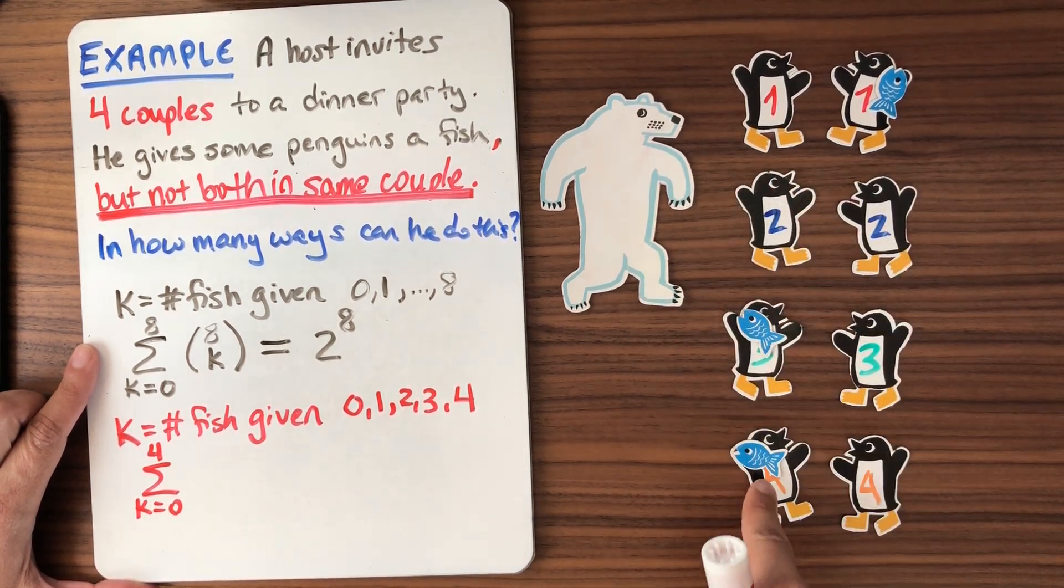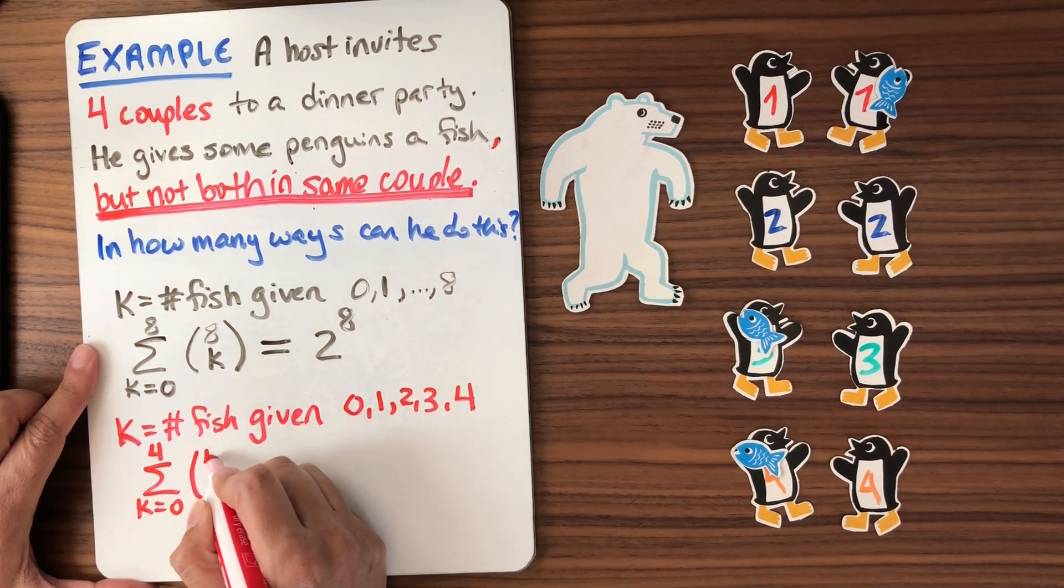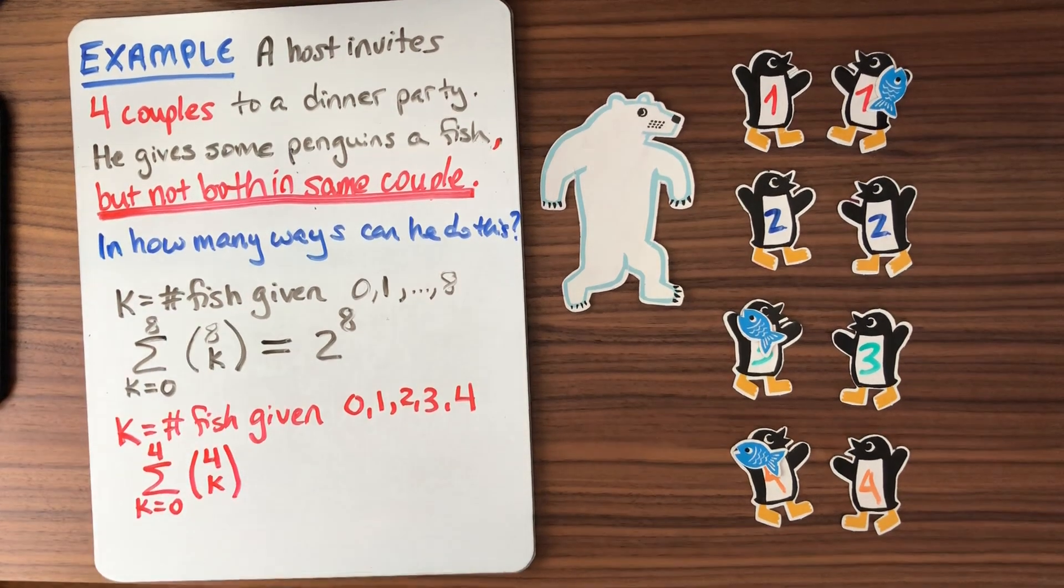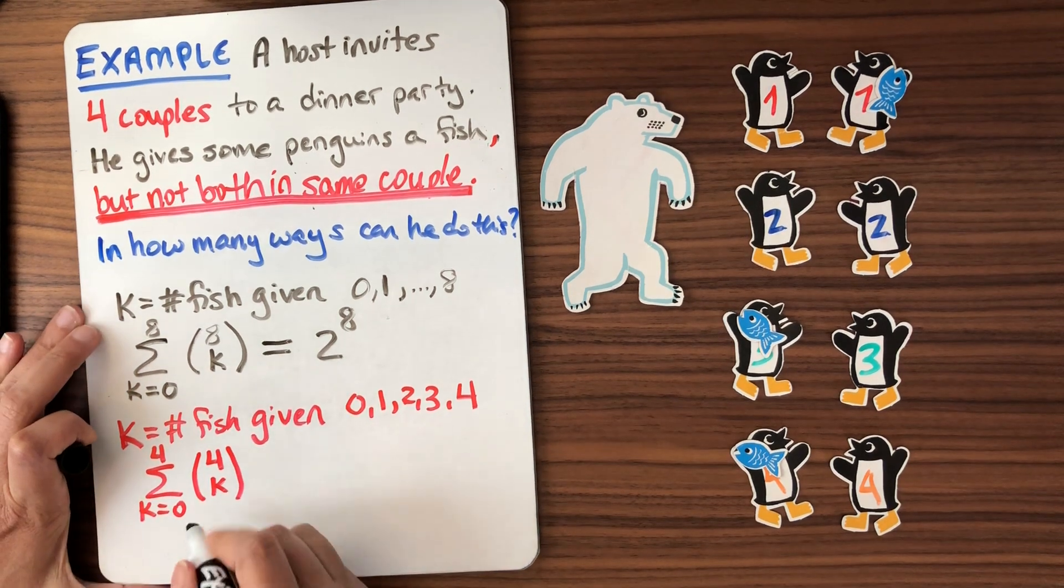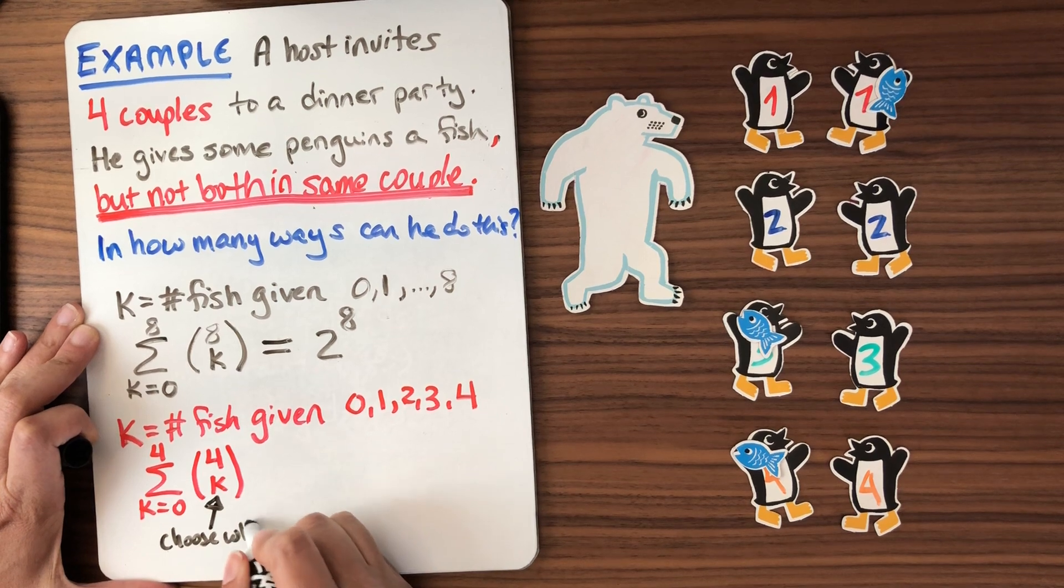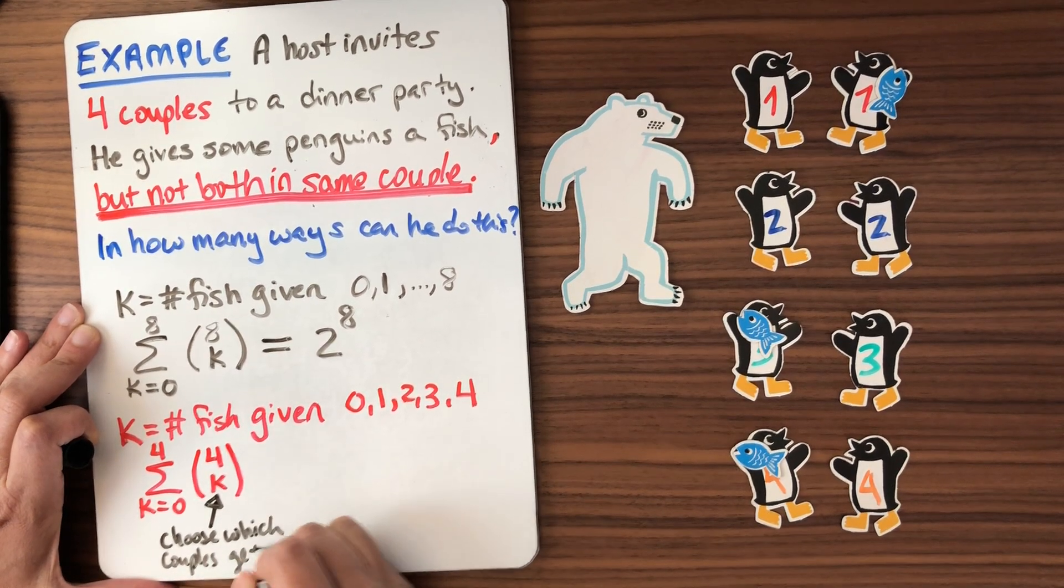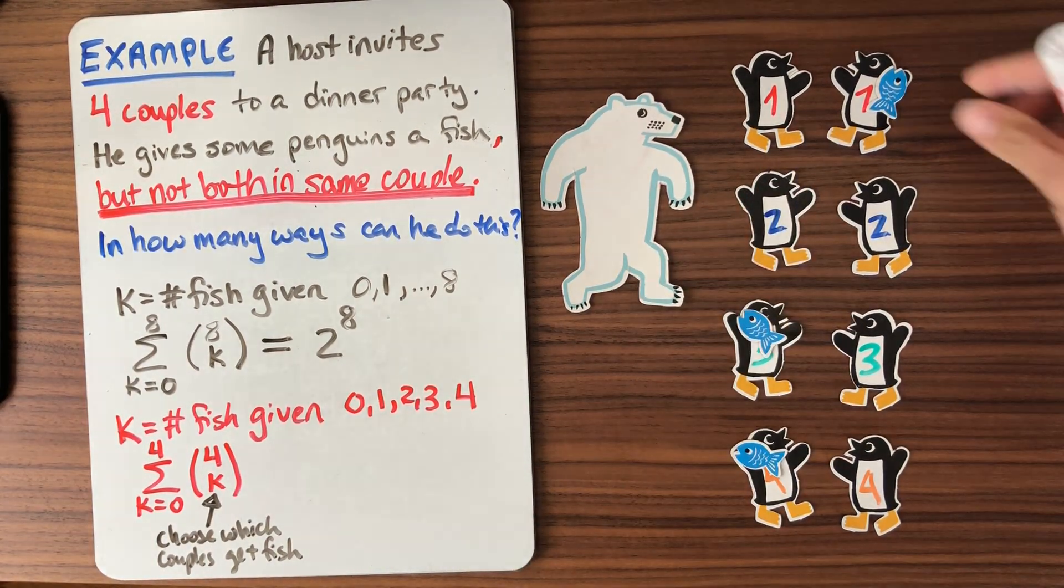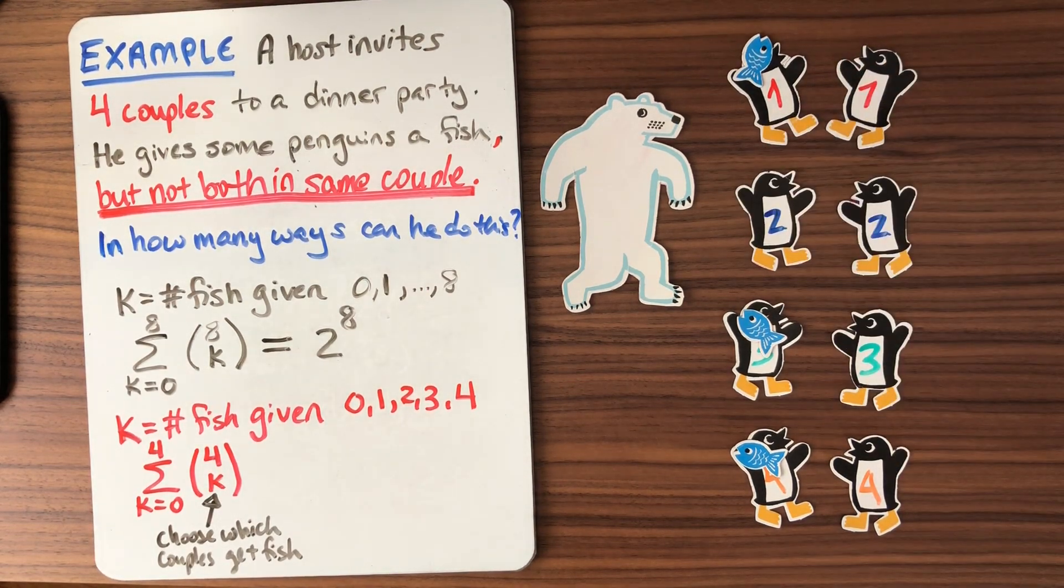So he takes each couple, right? Each couple, there are four couples. So he chooses which couples are going to get the fish. And he has another choice to make. So maybe I'll write a little more detail on this one. This is choose which couples get fish. But now once he's chosen, okay, the red couple is going to get a fish, he has two options. He can give it to the one on the left or the one on the right.